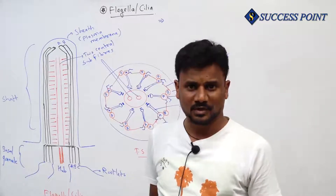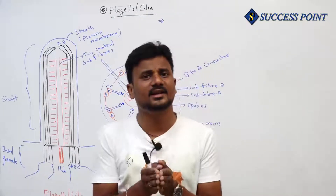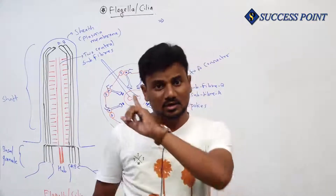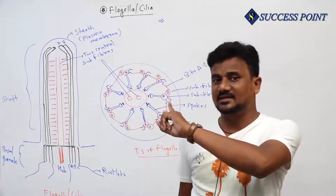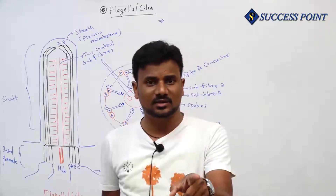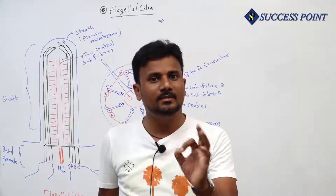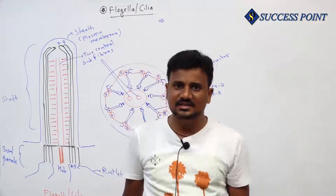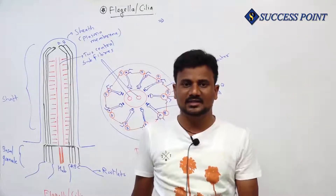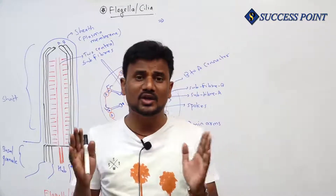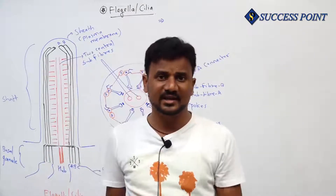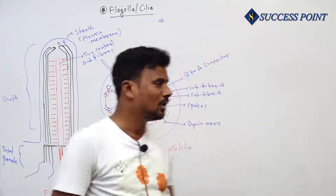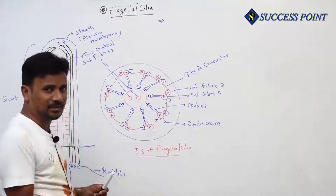The internal structure of flagella and cilia is exactly similar, with the difference that cilia are shorter in length than flagella, and usually the number of cilia per cell is higher than the number of flagella. They vary in number and length, but the internal structure of both organelles is the same — that's why we took them together. Also, prokaryotic flagella and eukaryotic flagella are completely different structurally and do not match each other in any way.